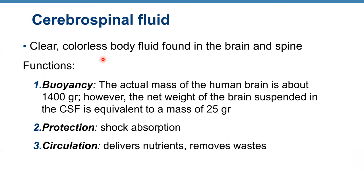Cerebrospinal fluid is a clear, colorless body fluid found in the brain and spine. It gives the brain buoyancy — the actual mass of the human brain is about one and a half kilograms, but it feels like only 25 grams because it's surrounded by fluid. CSF also provides protection, shock absorption, and circulation, delivering nutrients and removing waste.